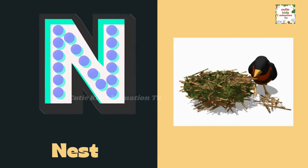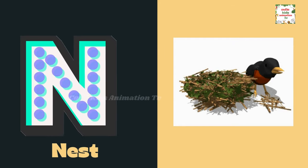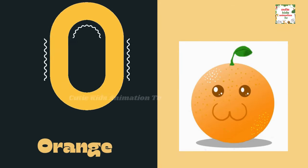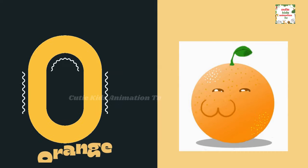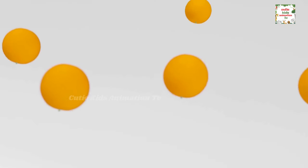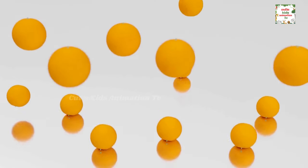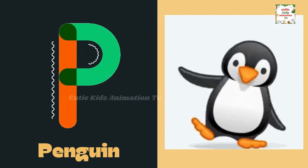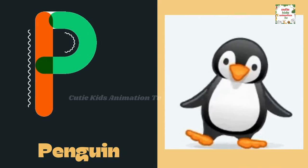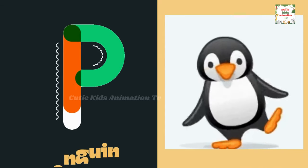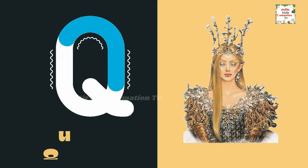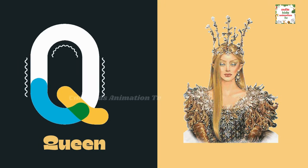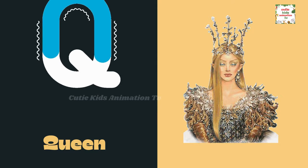N is for nest. N, N, nest. O is for orange. O, O, orange. P is for penguin. P, P, penguin. Q is for queen. Q, Q, queen.